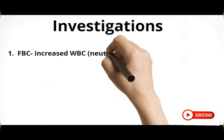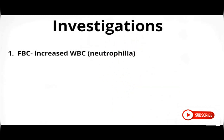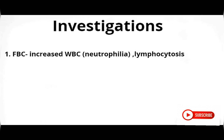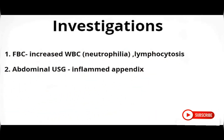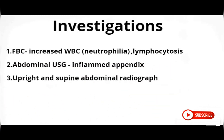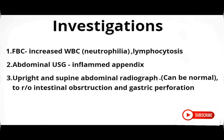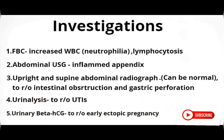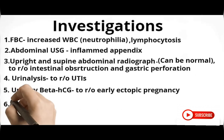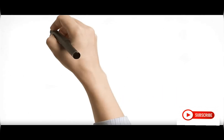Investigations for acute appendicitis include a full blood count, which may show increased neutrophil counts or lymphocytosis in cases of frequent viral gut infections where lymphoid follicles hypertrophy. Abdominal ultrasound can show the inflamed appendix. Upright or supine abdominal radiography can be normal but can also rule out intestinal obstruction and perforation. Urinalysis helps rule out UTI, beta-hCG rules out early ectopic pregnancy in women of childbearing age, and C-reactive protein indicates inflammation.